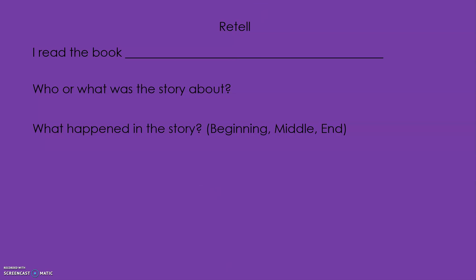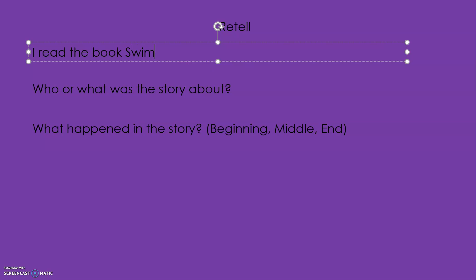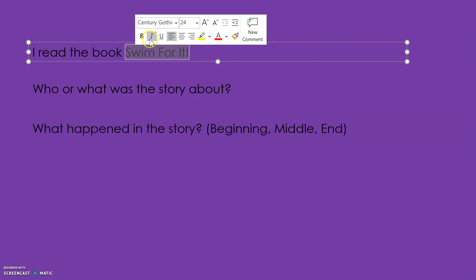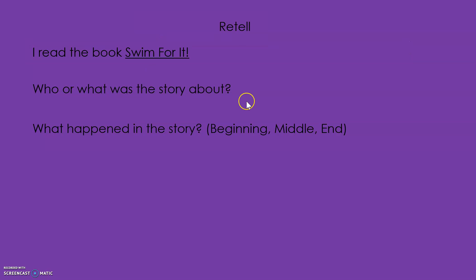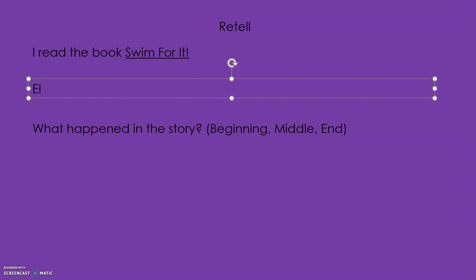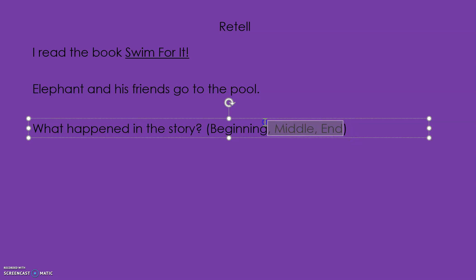Okay, let's take a look. What was the title of this book? Do you remember? 'Swim for It.' Because it's a title, we always underline — it's so important. Who or what was the story about? So who are the characters? Elephant and his friends. His friends go to the pool. So here we just talked about the character, elephant and his friends, and we talked about the setting — they go to the pool.